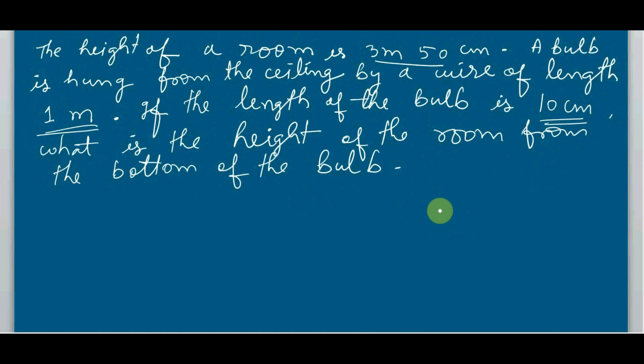First I want to show you to understand the sum. If this is the floor of the room and this is a wall and this is the ceiling, right, so with the help of a string of 1 meter, a bulb is hung like this. The length of the bulb is 10 centimeters. So you need to find out the height of the room from the bottom of the bulb, from here. That means you have to determine this one. So this is the sum and the total height is given here: 3 meters and 50 centimeters.